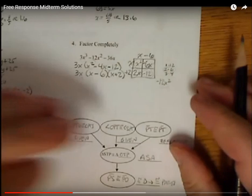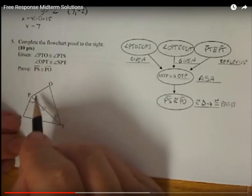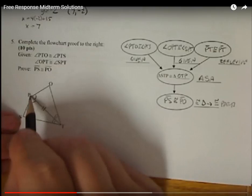Our flow chart proof. First thing you want to do is see about marking up your figure. So angle PTO is congruent to angle PTS. So I marked those with double marks. Then I wrote it into the bubble. That was given.